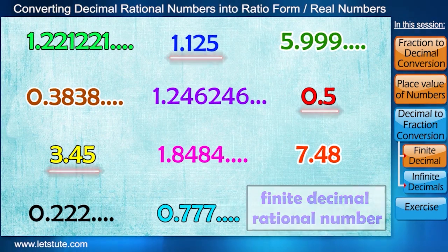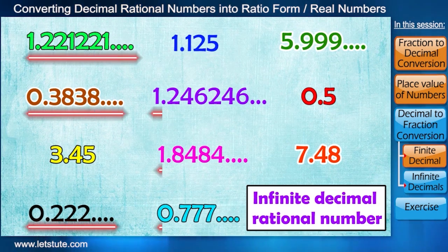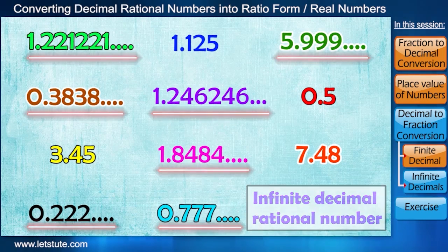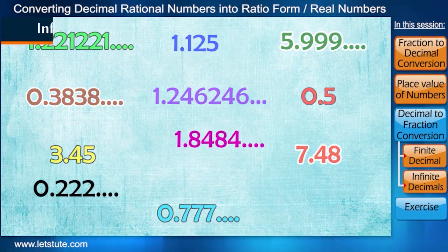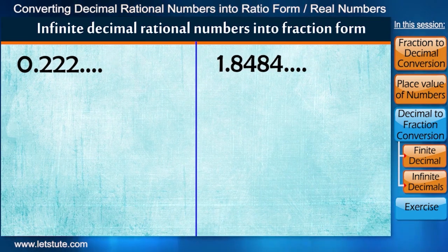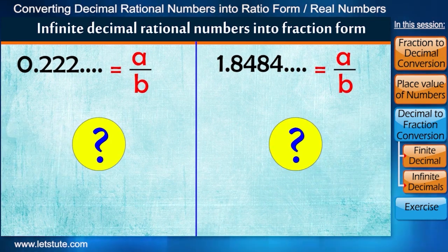But suppose we have rational numbers in the form of infinite decimals. Then how to go about it? We also have a very simple way for this. Let's learn that by taking these numbers first. We know that these infinite decimal numbers are equivalent to some fraction which we don't know yet.